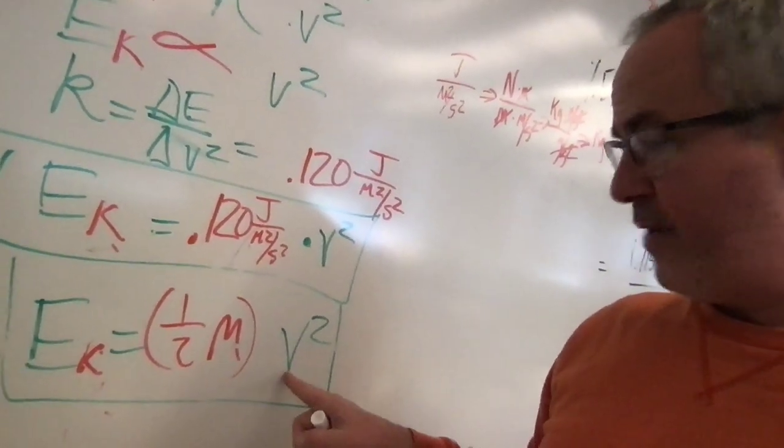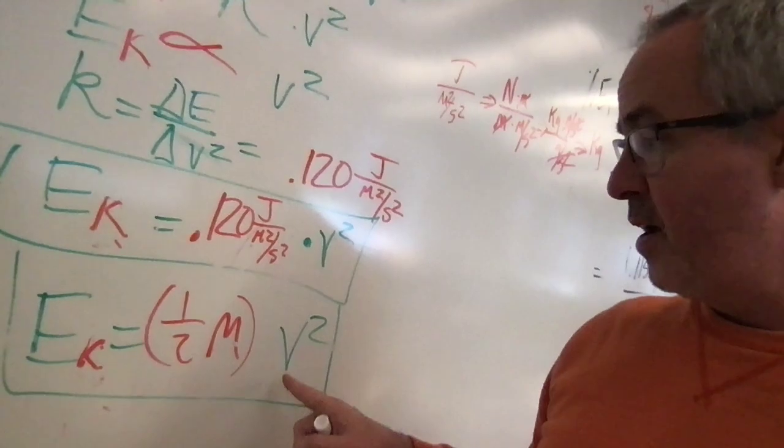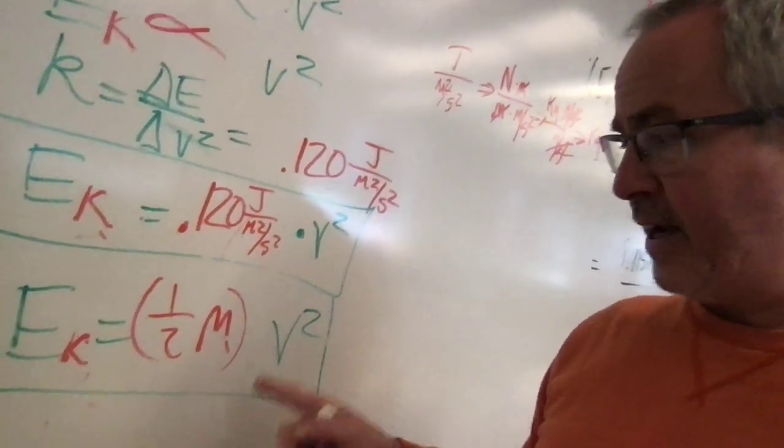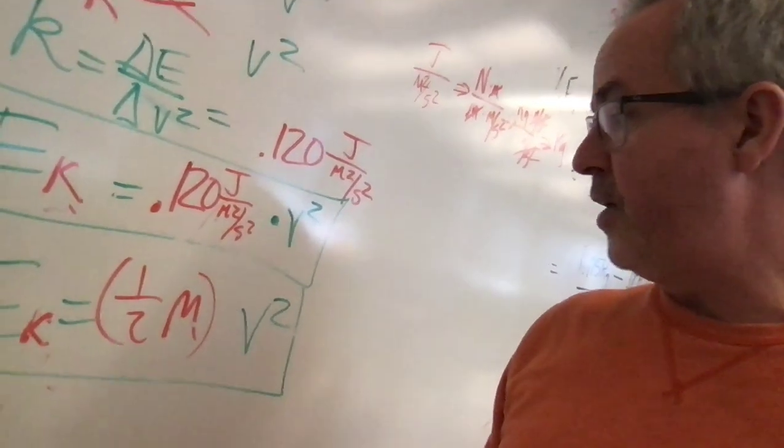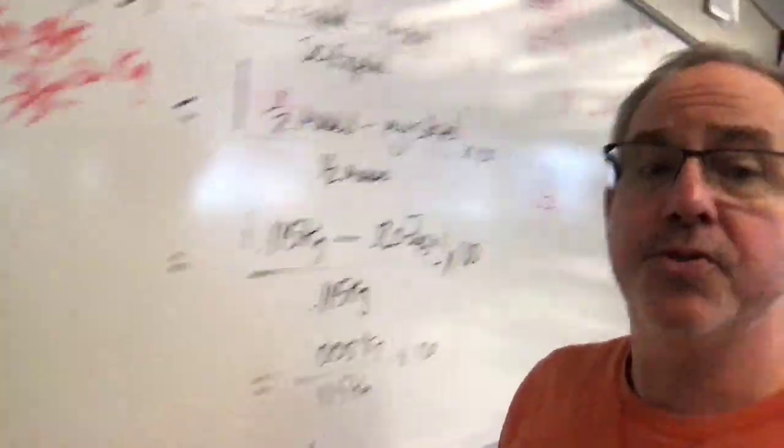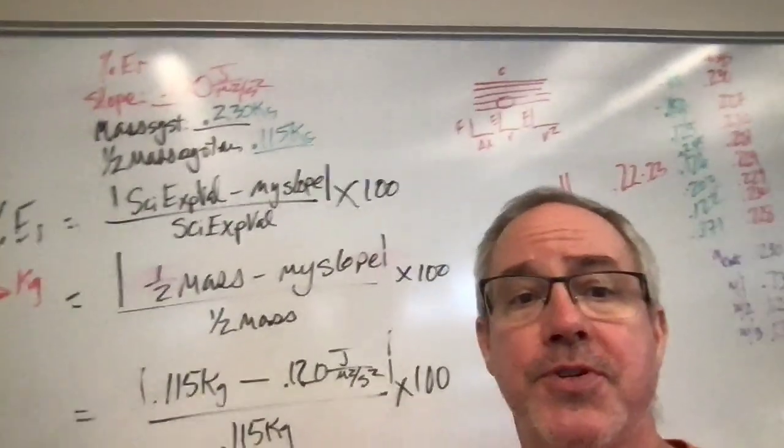I would normally throw in some calculations in here, put some values in for mass and then a value for speed squared, do the calculation, then find out how does the energy change if we double the mass or how would the energy change if we doubled the speed.